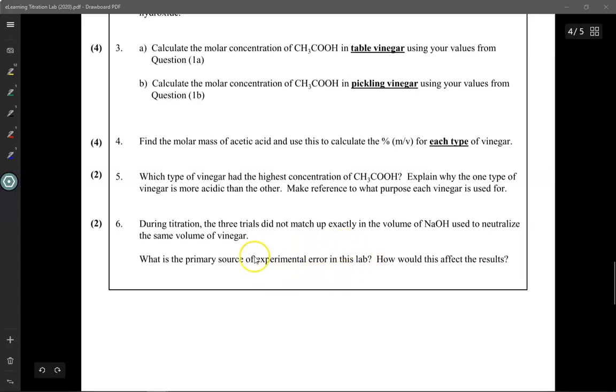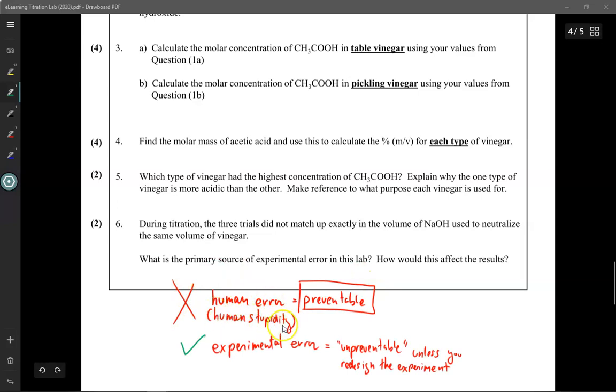Now it's important that you talk about experimental error, not human error. In science lab reports we never discuss human error. Human error is also known as human stupidity. This is something that's preventable. So don't go advertising how dumb you are.